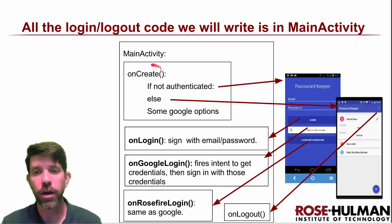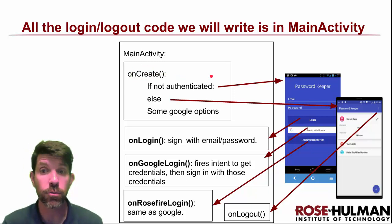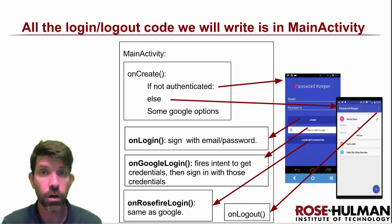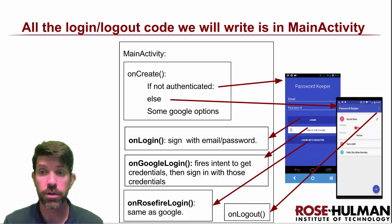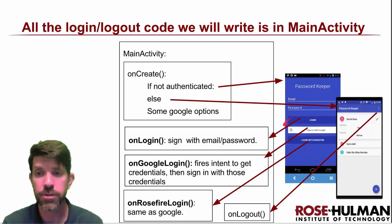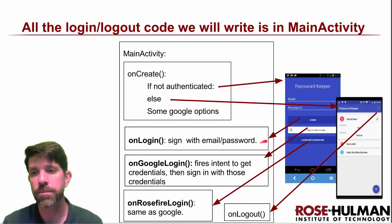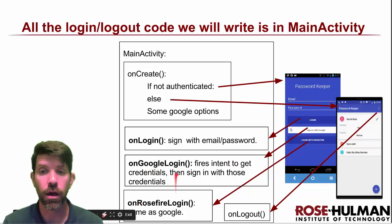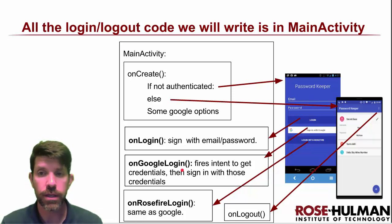MainActivity has an onCreate method that checks right away whether we are authenticated, using a listener for any change in auth status. If we're not authenticated, it's going to send us to the login page. If we were authenticated, it's just going to bring us directly to our passwords — so it will remember if we're still logged in until we sign out.